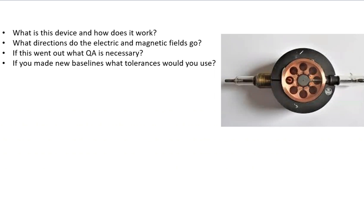If you had to make new baselines, what tolerances would you use? So we have a magnetron here, and it supplies microwaves for low-energy LINACs, typically 12 MV or less. It's less costly but also less stable than a klystron.